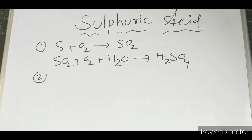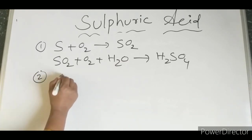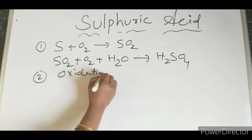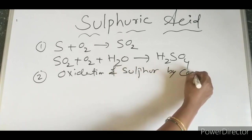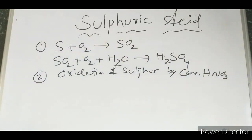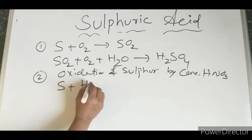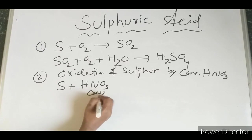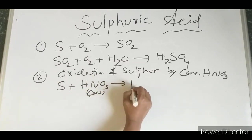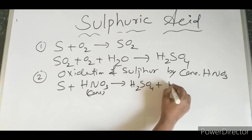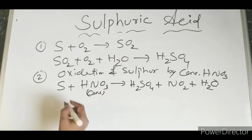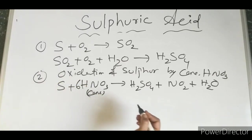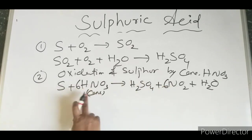The second method of preparation is the oxidation of sulfur by concentrated HNO3. If we take sulfur plus concentrated HNO3, it gives rise to H2SO4, along with nitrogen dioxide and water. Balancing this equation gives coefficients of 6, 6, 6, 6, and 18.